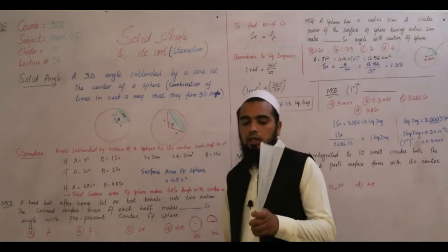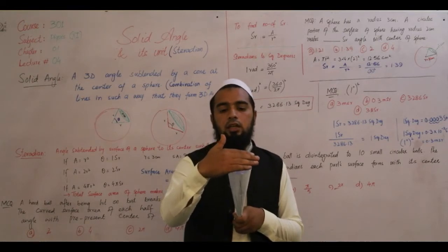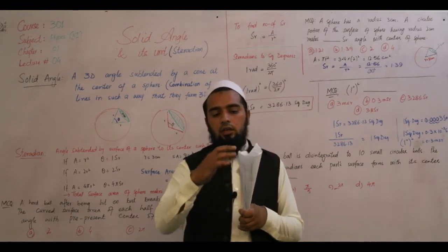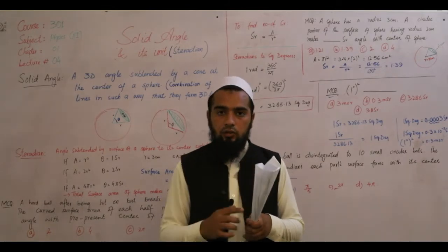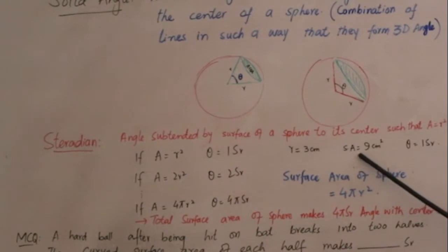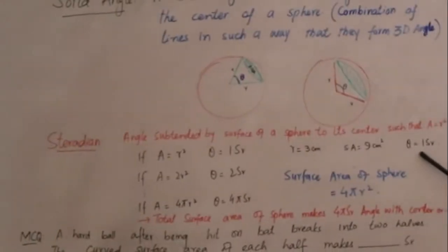اگر آپ اس کو دیکھیں تو اگر یہ area آپ calculate کریں — area of circle کے فارمولے سے آپ اسے معلوم کریں — اور پھر اس r کو دیکھیں: اگر area r² کے برابر ہو تو angle ہمارے پاس بنتا ہے one steradian. یہاں دیکھیں: if r = 3 cm اور area معلوم کیا اور وہ 9 cm² نکلا تو theta ہمارے پاس one steradian ہے، کیونکہ 3² = 9 اور area بھی 9 ہے — وہ area 9 cm² ہے، وہ angle بنائے گا one steradian.